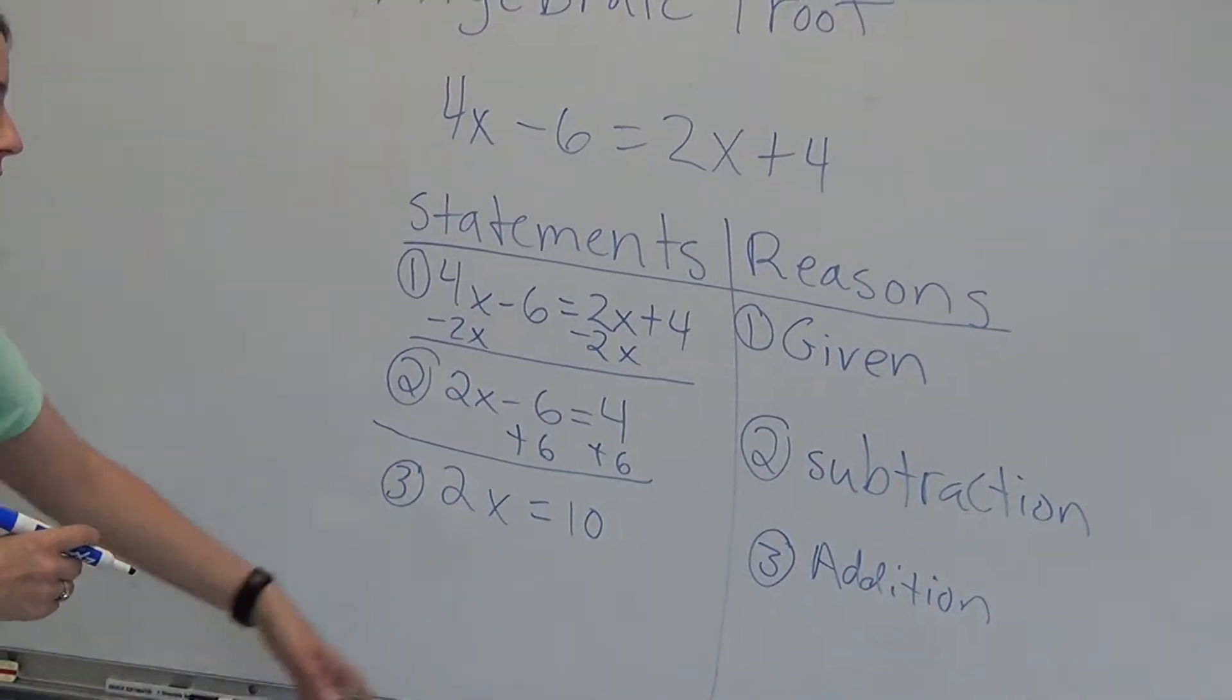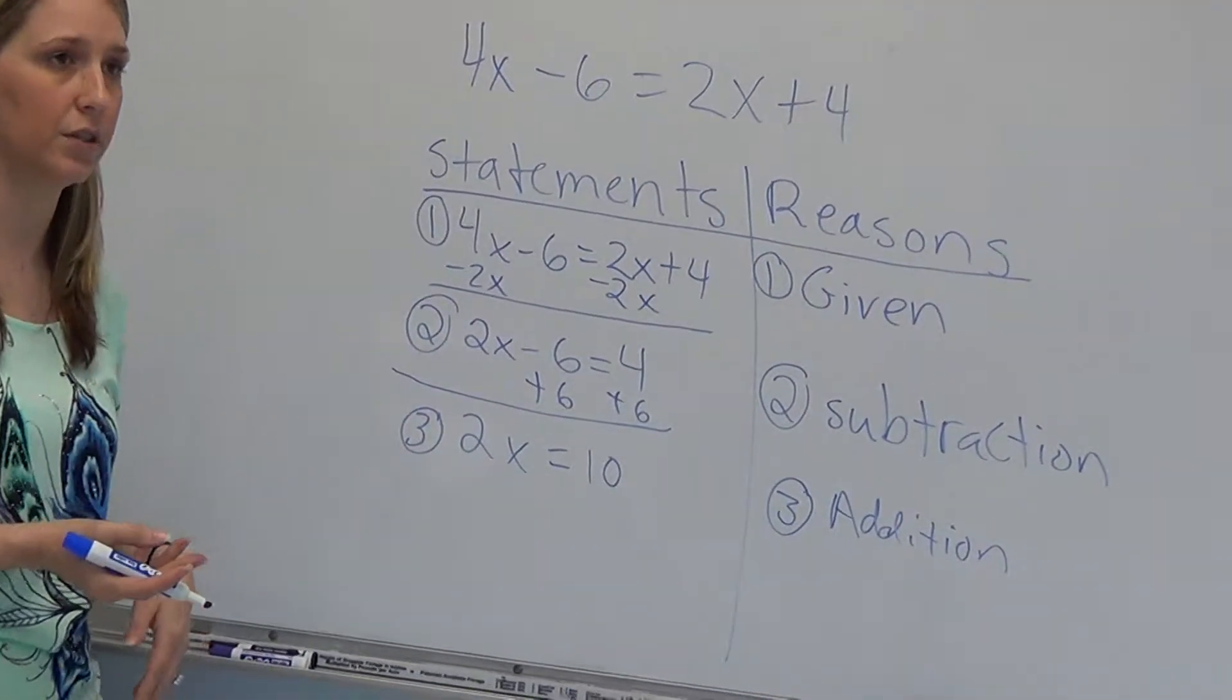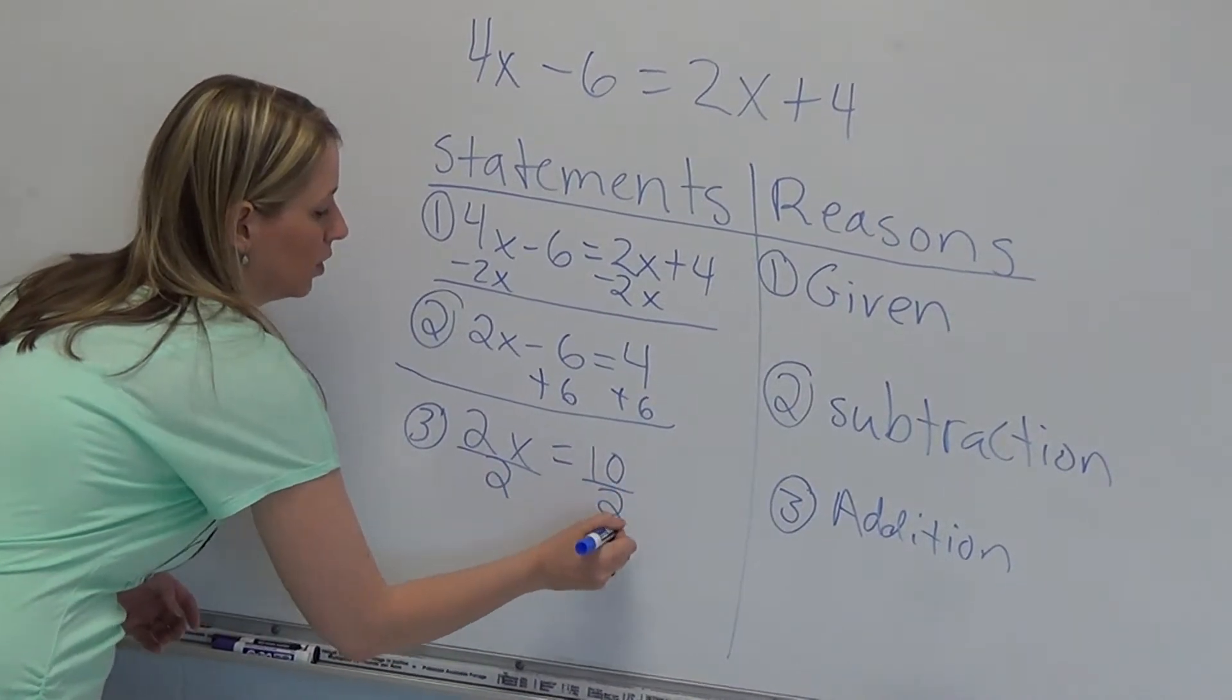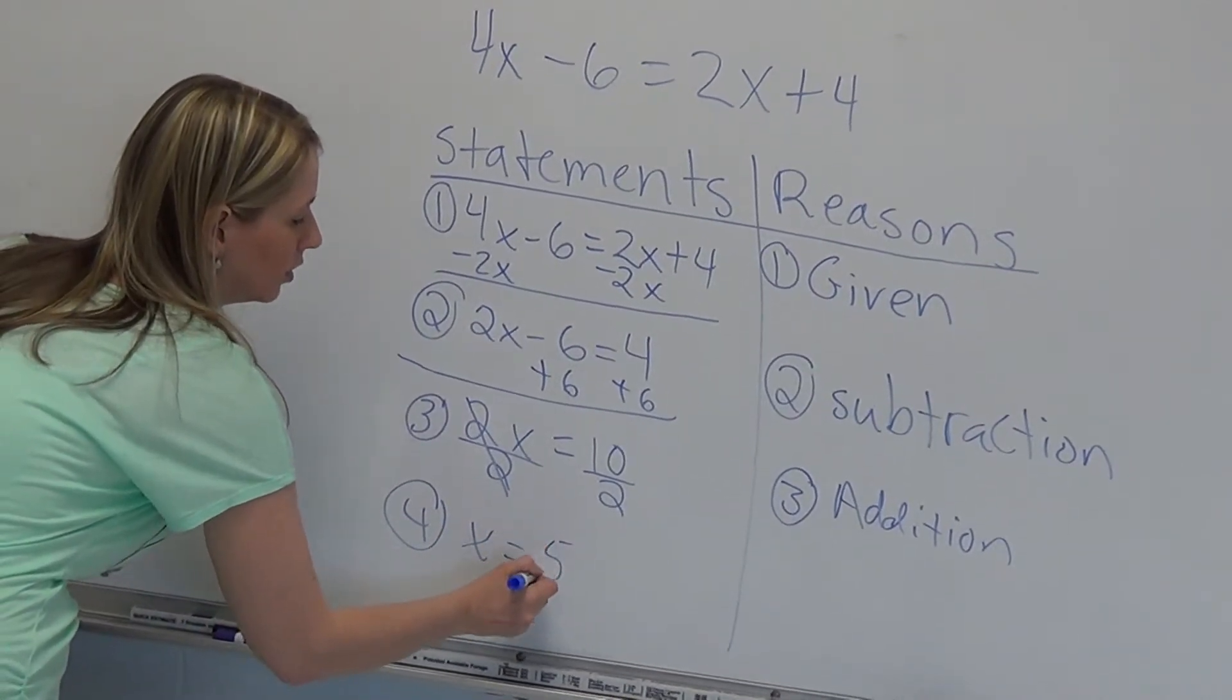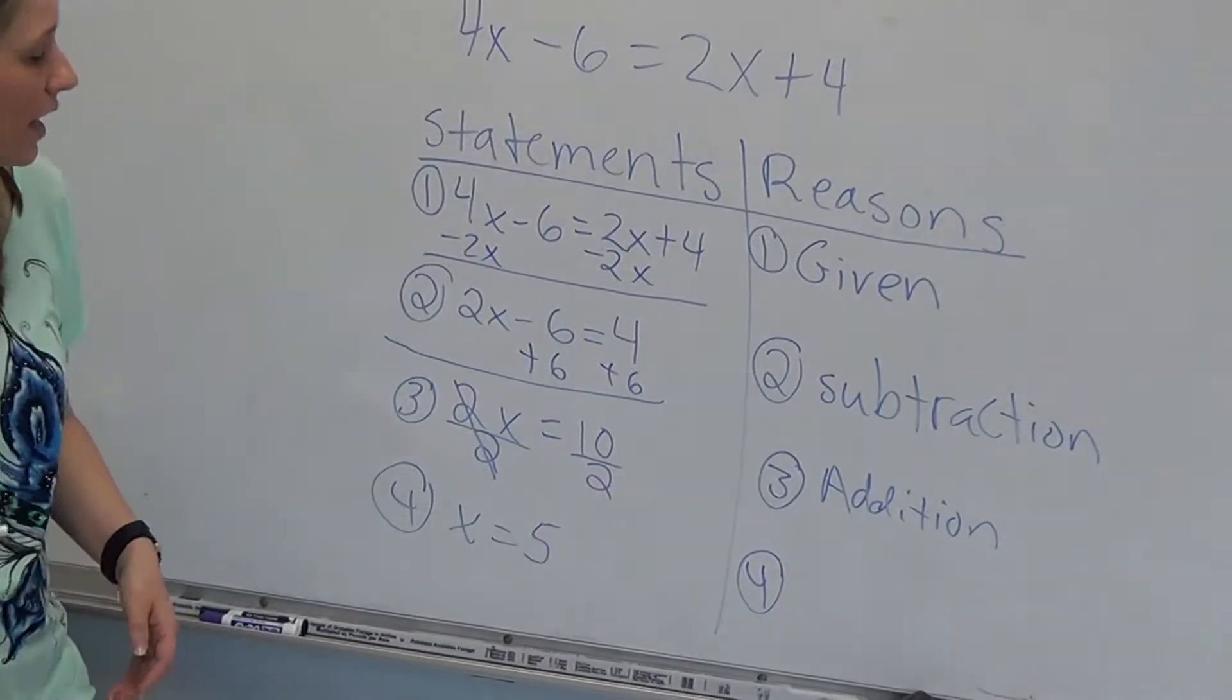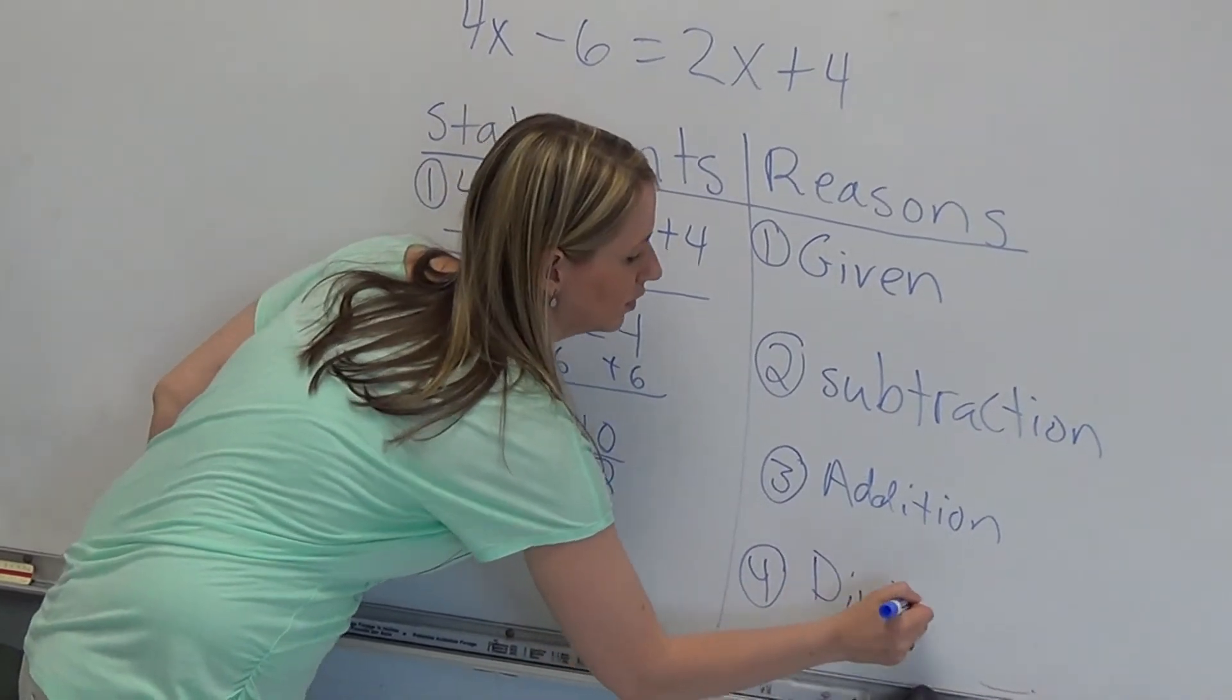And we look at what we need to do next to get x by itself. That's like 2 times x. The opposite of times is division. So we divided both sides by 2. Okay? The 2's cancel out. And we get to our 4th step, which would be x is equal to 5. How do I know x is 5? Or what did I do to get there? I divided by 2. So my reason is division.